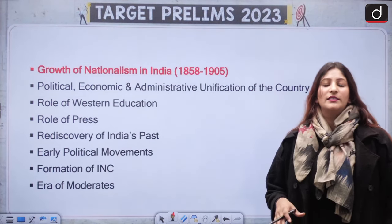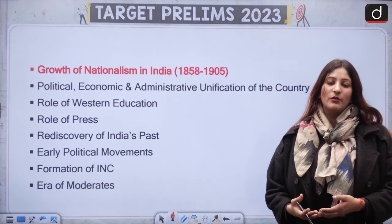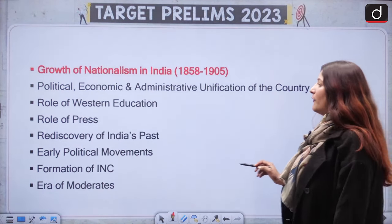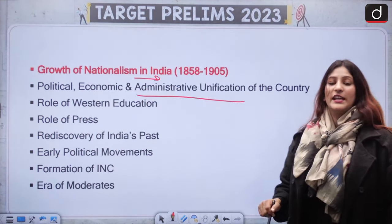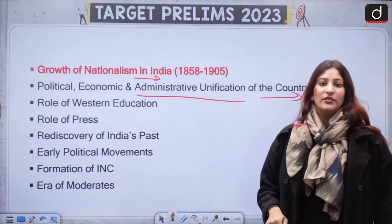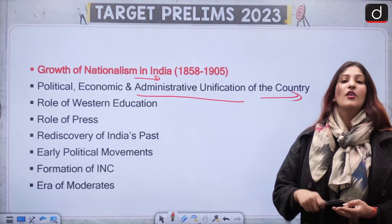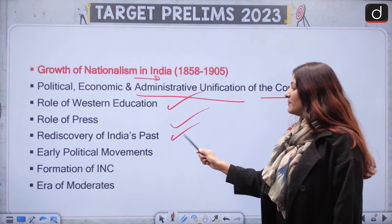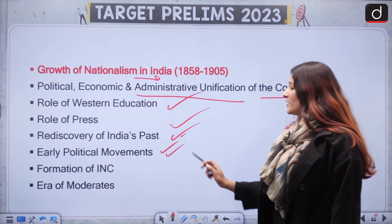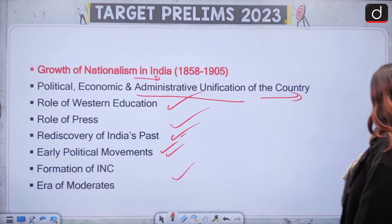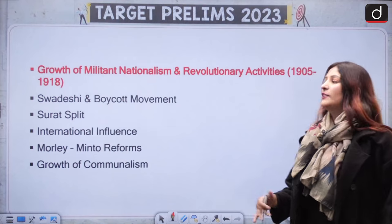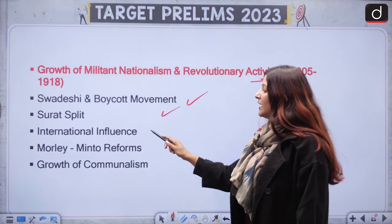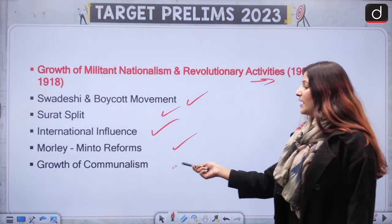Growth of nationalism — the people were not happy. Although administration had passed from the East India Company to the Crown, things on the ground remained the same. There was political, economic, and administrative unification of the country. Important leaders, their organizations, objectives, and the role of Western education and press are important. Rediscovery of India's past, early political movements, formation of the Indian National Congress, era of Moderates, growth of militant nationalism, and then revolutionary activities — Swadeshi and Boycott movement, Surat Split, international influence, and growth of communalism.